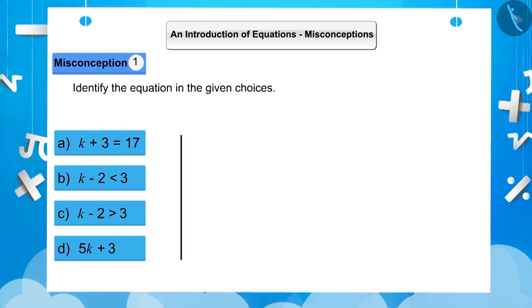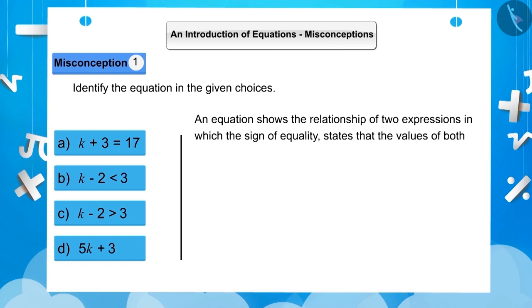An equation shows the relationship of two expressions in which the sign of equality states that the values of both LHS and RHS are equal. But sometimes children misunderstand and assume that it is an equation even if there is a greater or less than sign between the left side and the right side, due to which they answer options B and C.